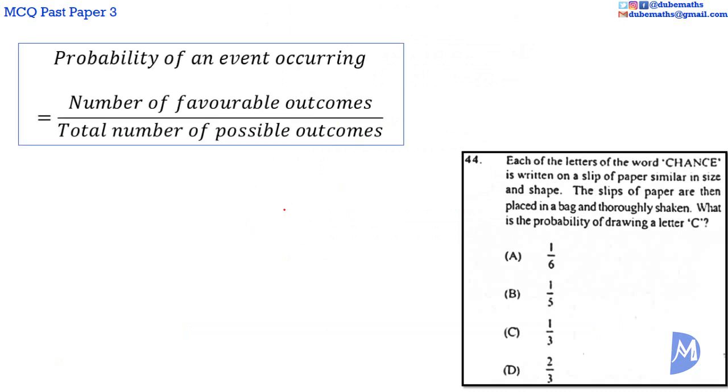Question 44. The probability of an event occurring is equal to the number of favorable outcomes over the total number of possible outcomes. We ask about the probability of drawing a letter C. Each of the letters of the word CHANCE is written on a slip of paper and placed in a bag and thoroughly shaken. We're going to pull one of these letters randomly. A favorable outcome is drawing a C. There are two C's, so there are two possibilities of drawing a C.